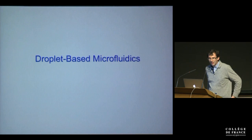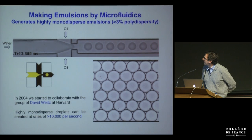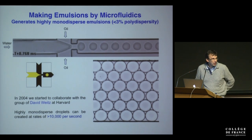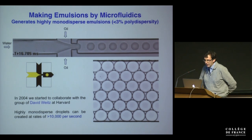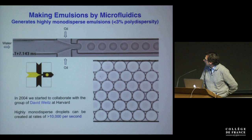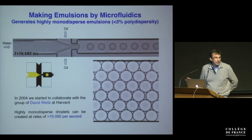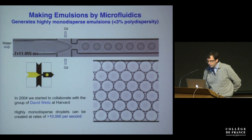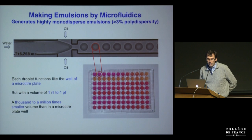A good place to start is: what is droplet-based microfluidics? The story starts back in 2004, when we started to collaborate with a group of Dave Weitz, who is a physicist at Harvard developing beautiful microfluidic systems to manipulate fluids and make droplets. In microfluidic systems, you can create beautiful monodisperse emulsions where all the droplets are basically the same size at rates of over 10,000 per second. The idea is to use each droplet like the well of a microtiter plate — a little independent microreactor.